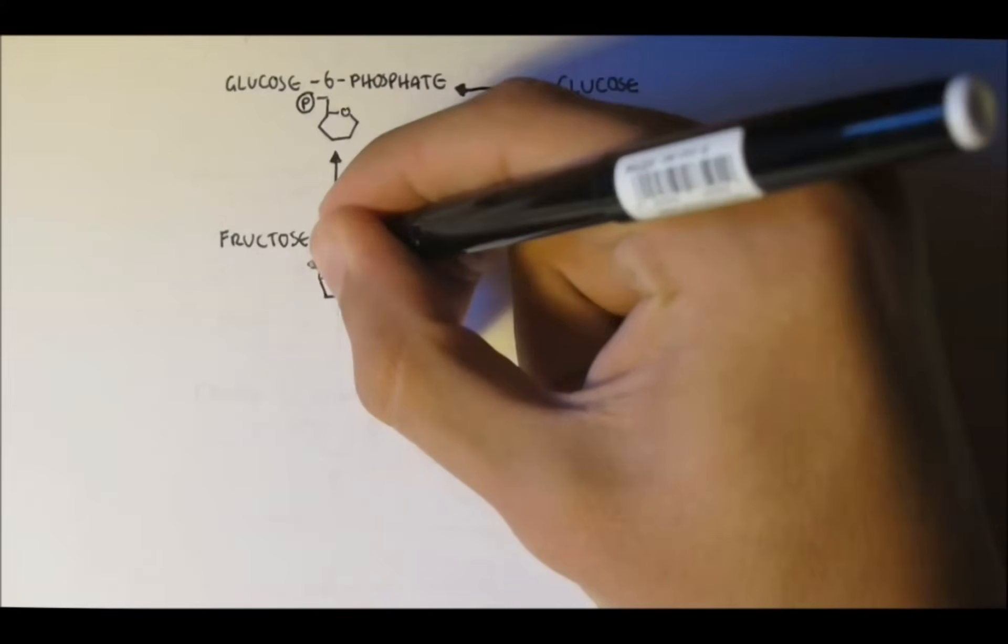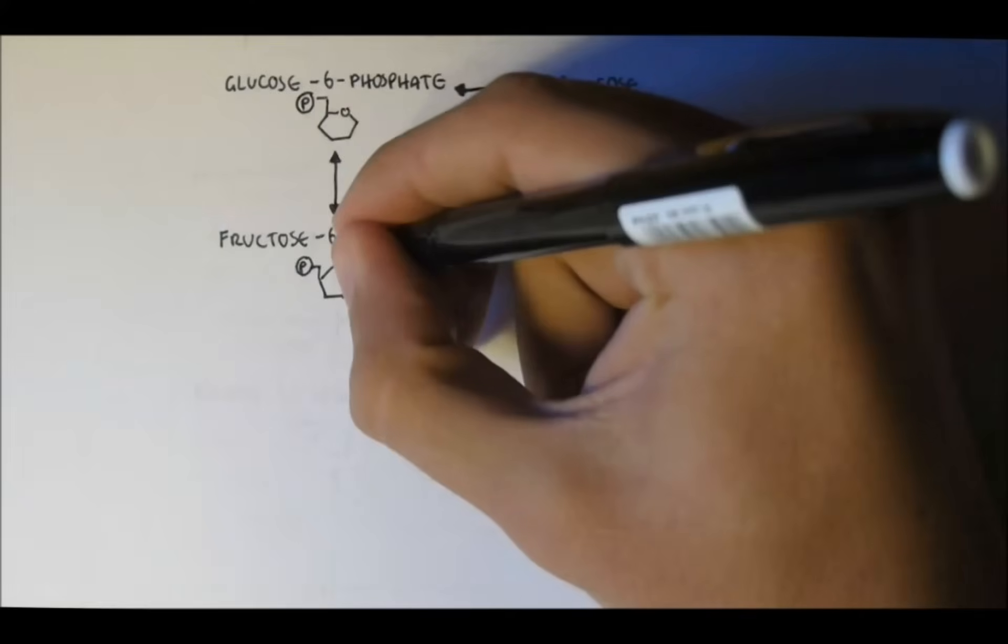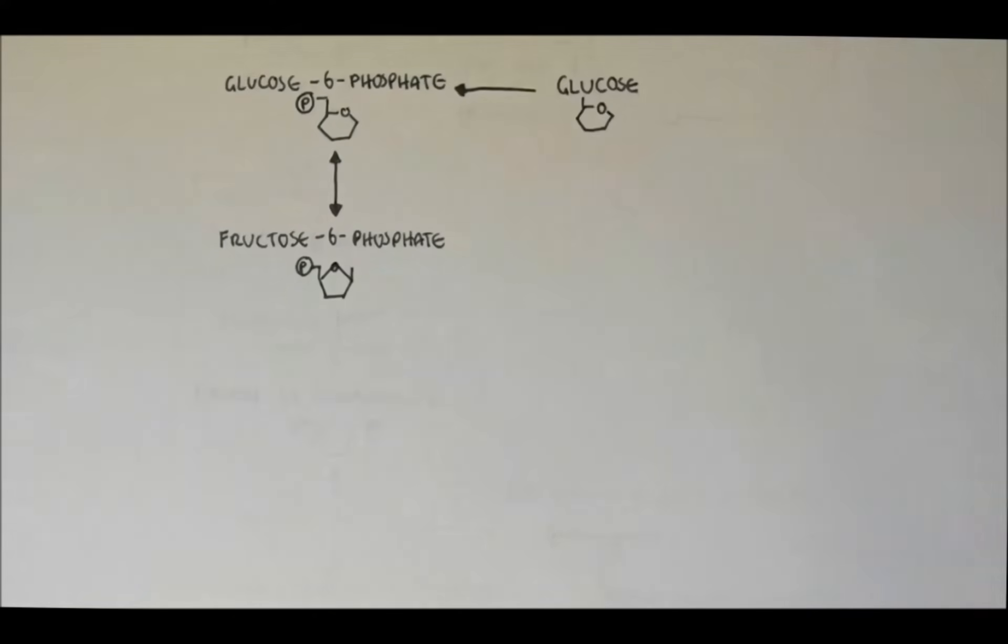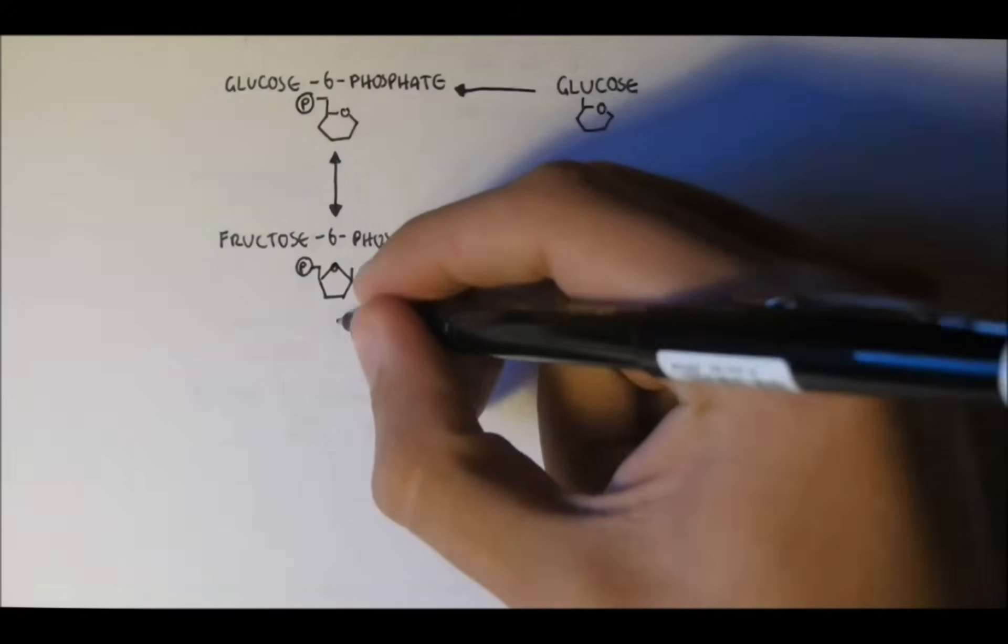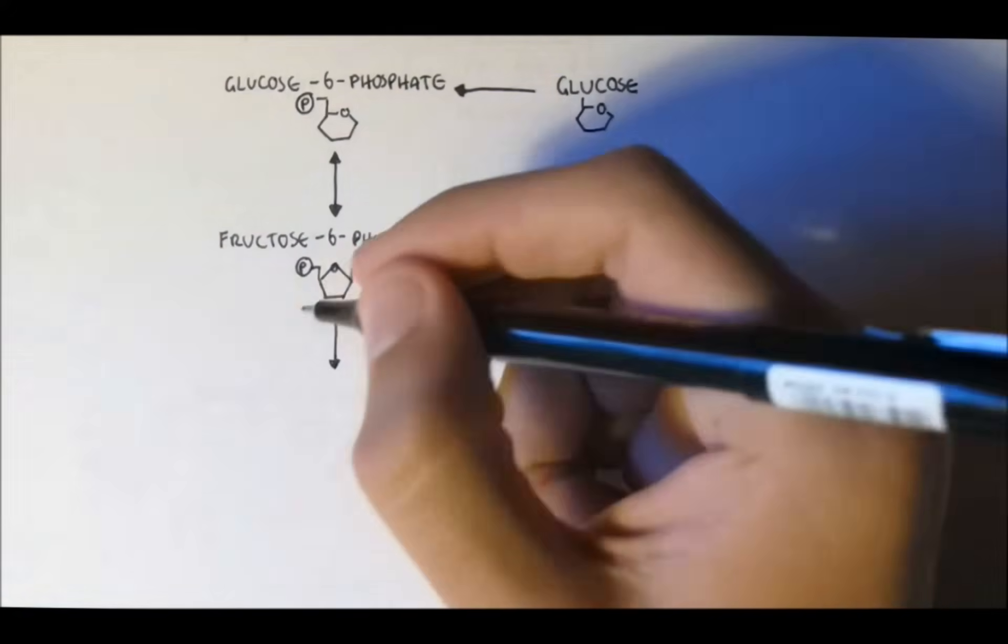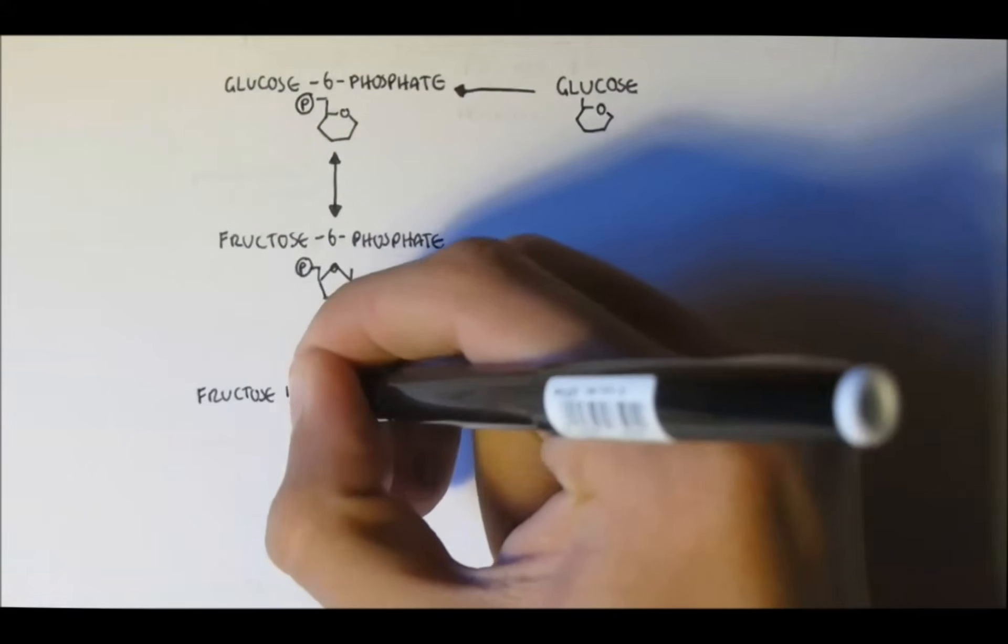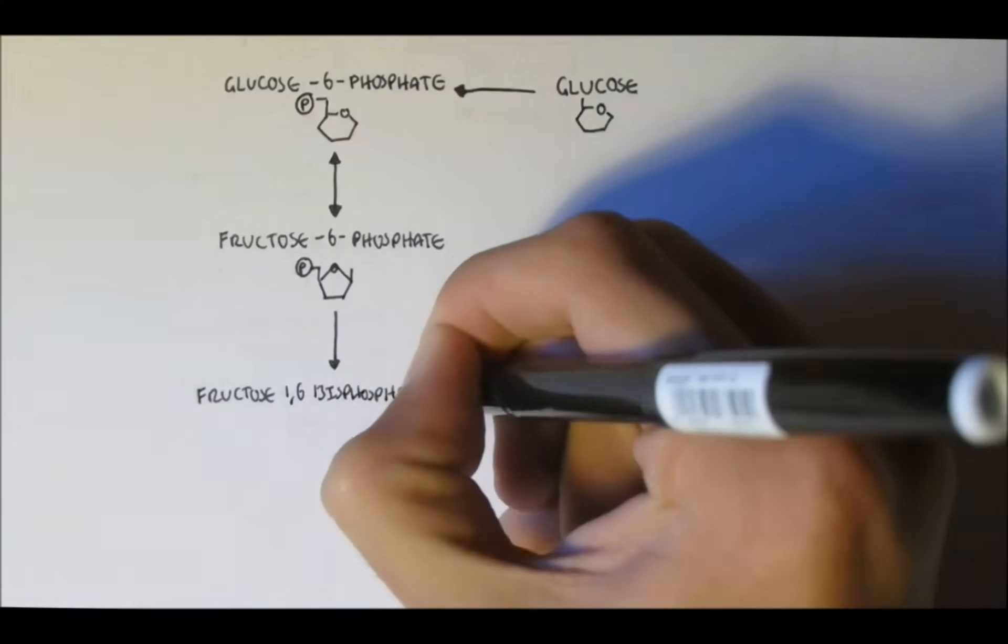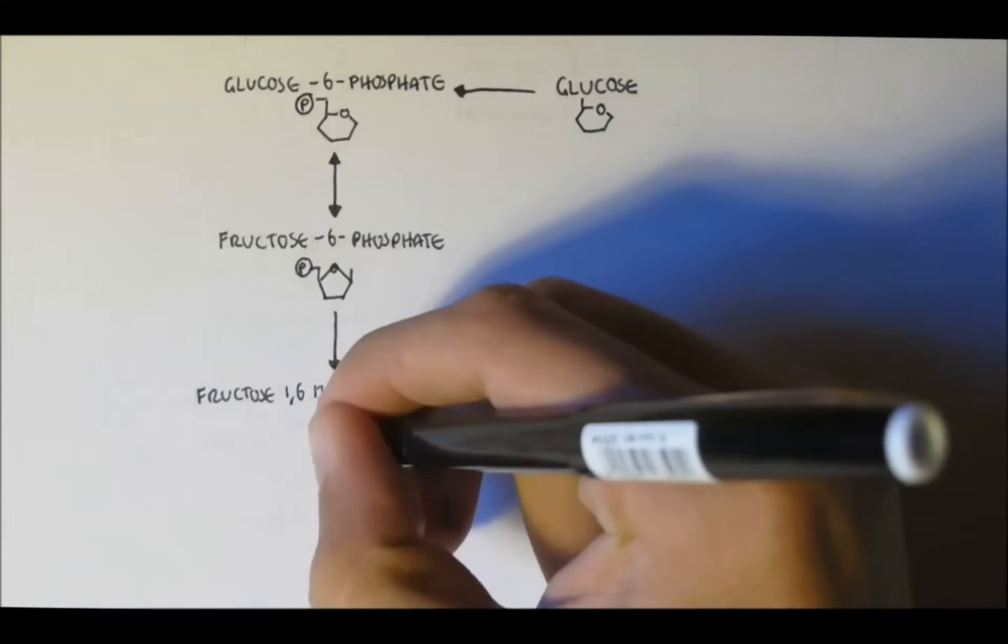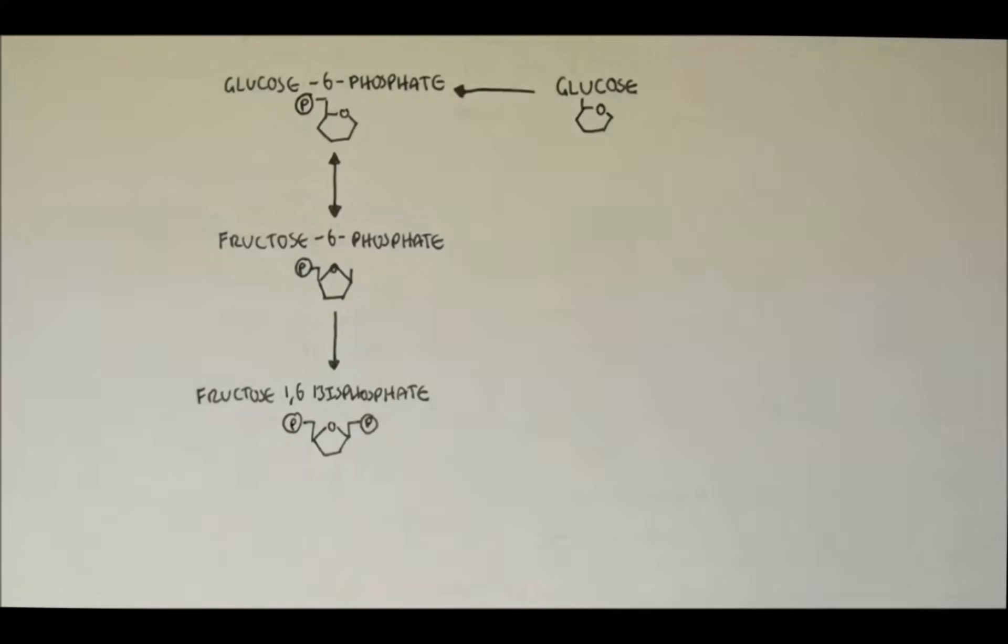Glucose-6-phosphate and fructose-6-phosphate are isomers of each other. This line with the two arrows indicate that the reaction can be reversed, whereas the reaction before can't be reversed without using a different enzyme. Fructose-6-phosphate will convert to fructose-1,6-bisphosphate, with an addition of a phosphate. So now there is a phosphate on the first and the sixth carbon.